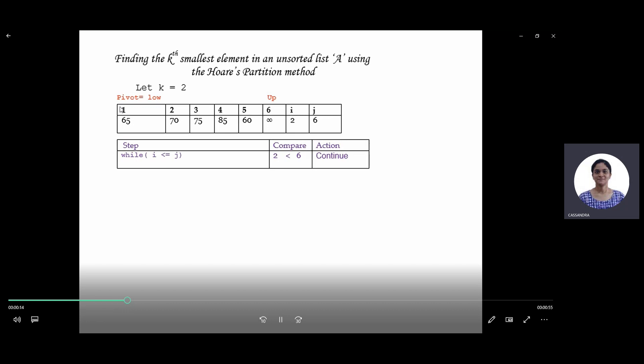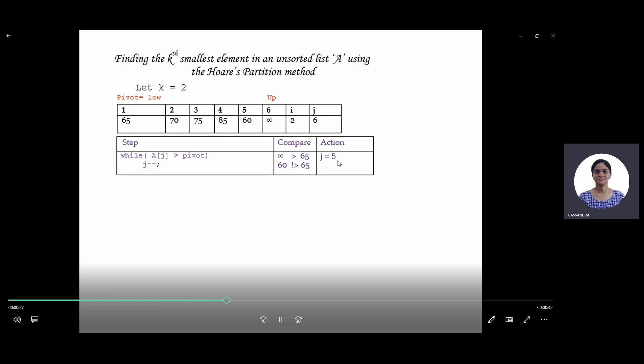The first element is assumed to be the pivot, and the highest element is at index 6. Here we compare the values of i and j. Since it's lesser, we check if the value at i is less than the pivot. It's greater, so we do not increment i.